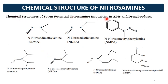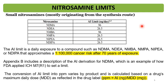The chemical structures of 7 potential Nitrosamine impurities in APIs and drug products are given by US FDA guidelines. These are: NDMA, NDEA, NMPA, NDIPA, NIPEA, NDBA, and NMBA. Their respective acceptable daily intake (AI) limits are given in nanogram per day. These small Nitrosamines originate from the synthesis route.